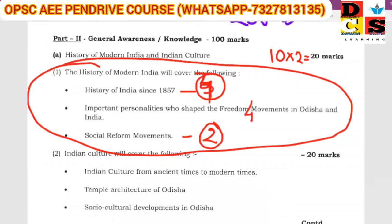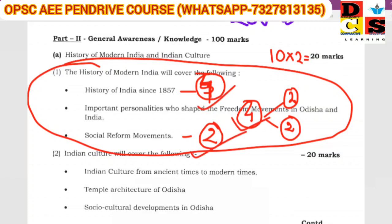The other chart shows approximately 2 to 3 questions from Odisha, Indian personality, and the freedom movement of India. So the total is 4 plus 4 plus 2, which equals 10. This is the answer for the question distribution.